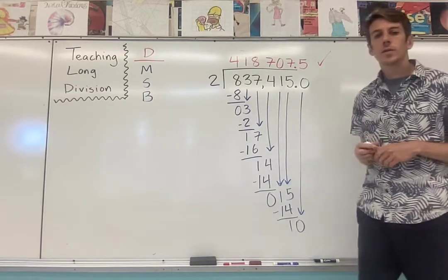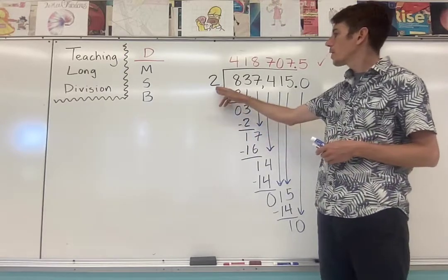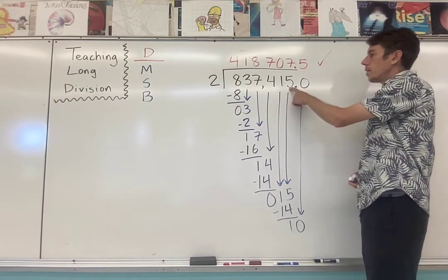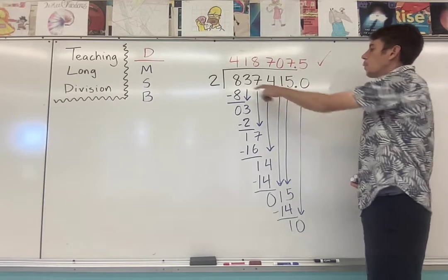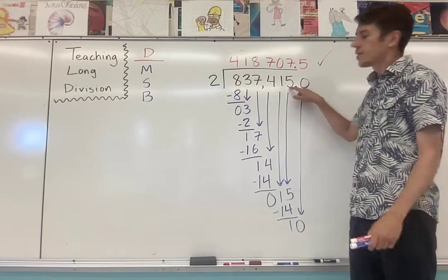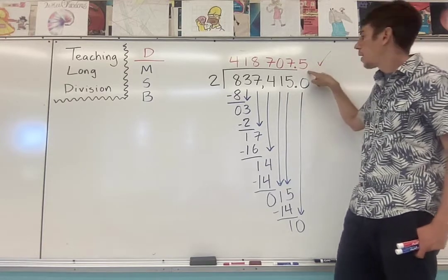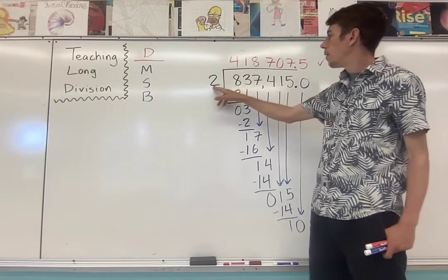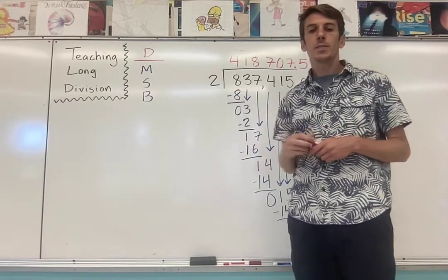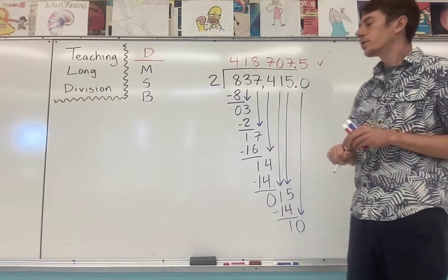Another good thing to do with students is use the same divisor for a bunch of examples in a row. So keep dividing by two and get them to start noticing when the number is even, there'll be no remainder. It'll be a whole number up here. But whenever the dividend or the number inside the garage is odd, then the quotient up here is going to end in 0.5 every single time. Every single time you divide an odd number by two, your answer is going to end in 0.5 because there'll be that extra one that needs to get split in half.